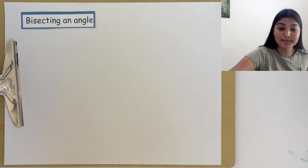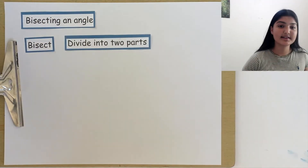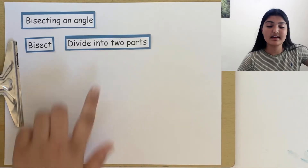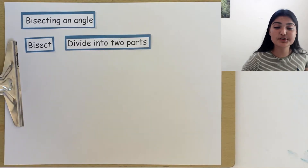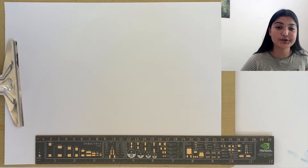Previously, we've looked at bisecting line segments, but today let's switch it up. Let's bisect an angle. Remember that bisect means to divide into two parts, and both of those parts are equal. So let's start by drawing an angle. Let's draw and bisect a 60 degree angle.